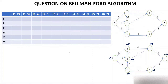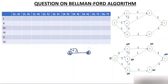Let me re-explain relaxation. If A has weight 5, edge weight is 11, and B has weight 17: add 5 plus 11 to get 16. Is 16 less than 17? Yes, so change B to 16 — we have relaxed. If B were 13, then 5 plus 11 is 16, which is not less than 13, so we do not relax. That is what relax means. Now let's start solving.